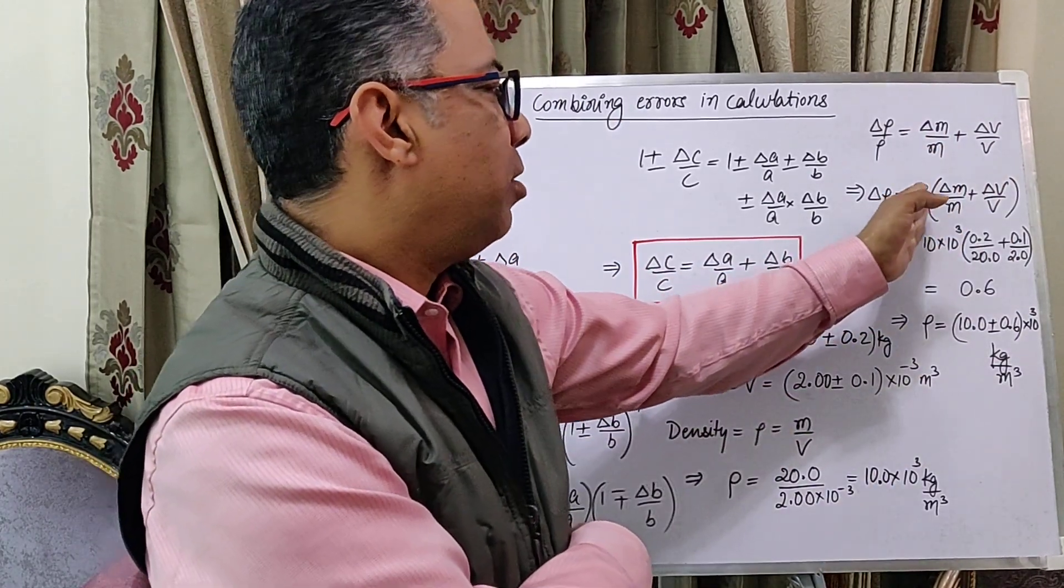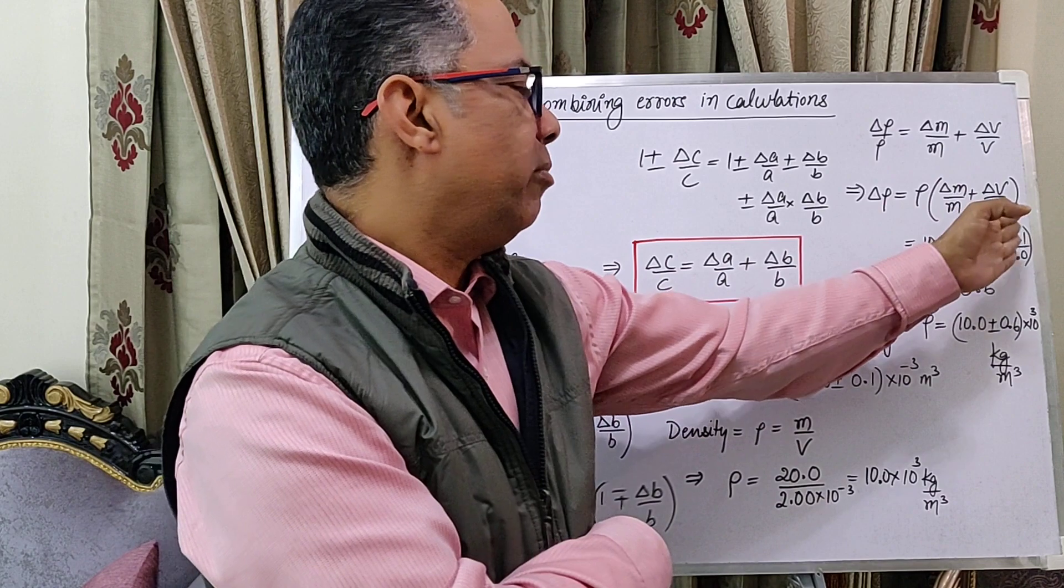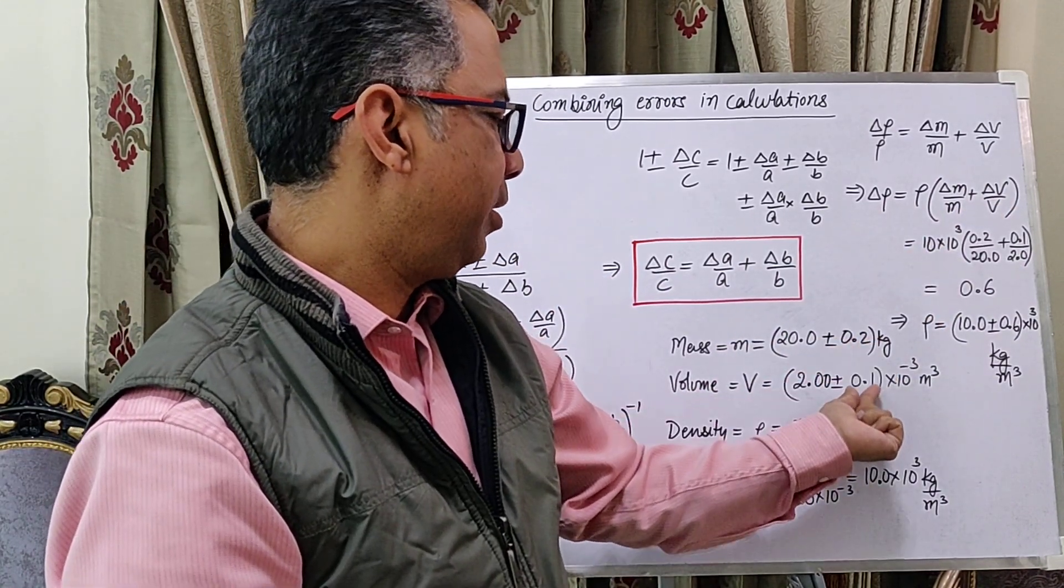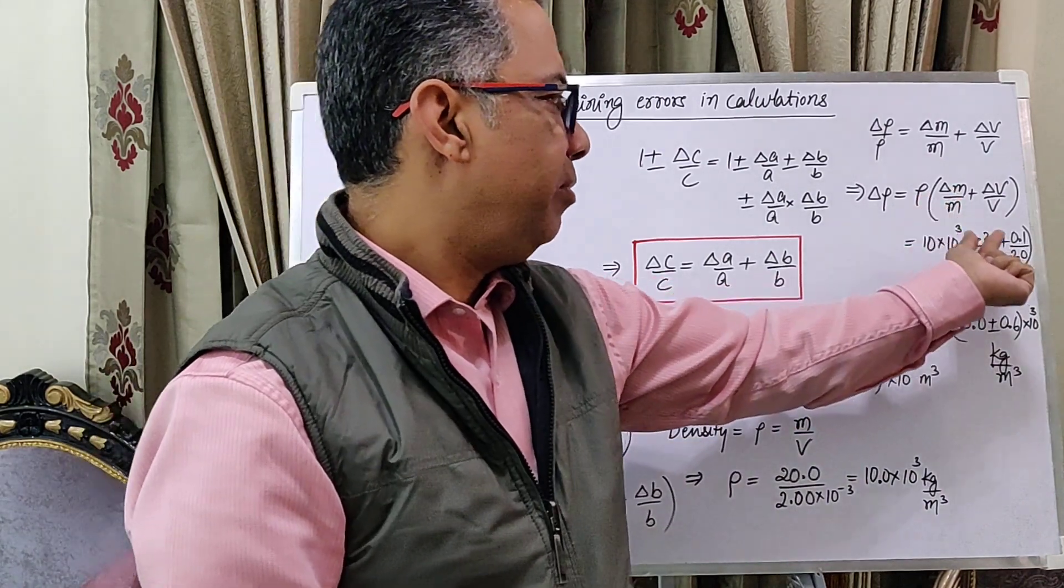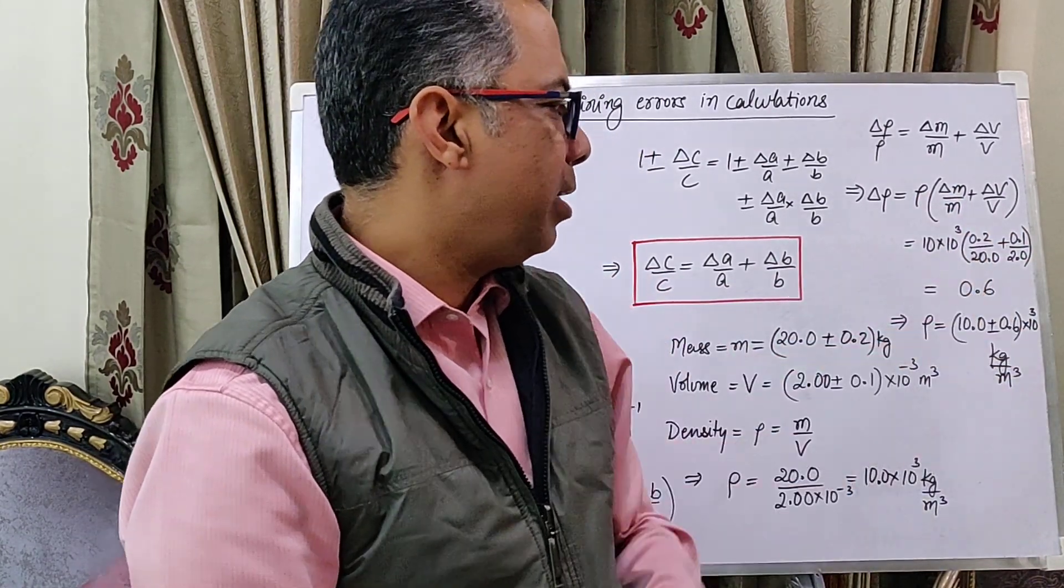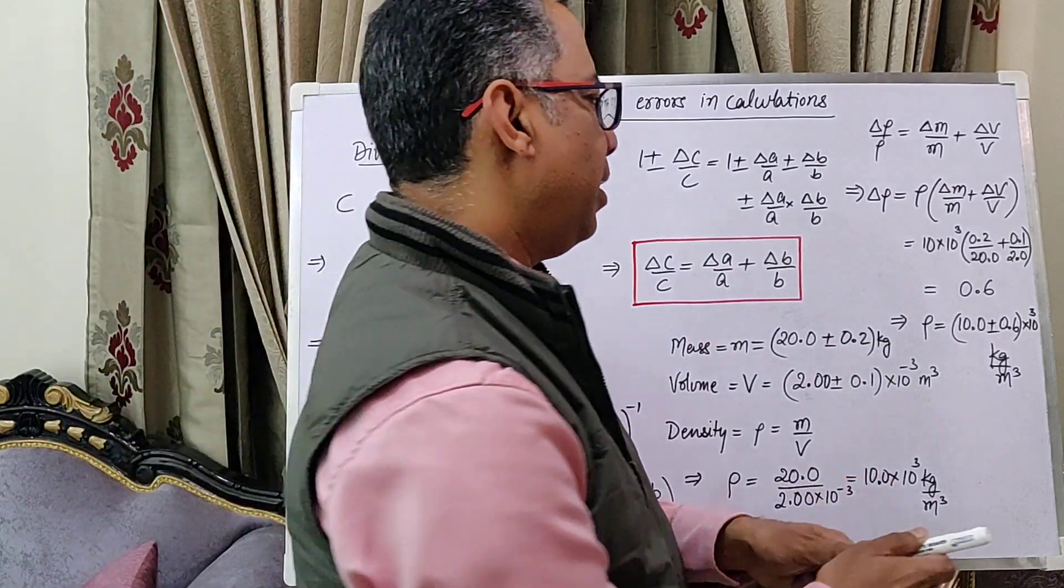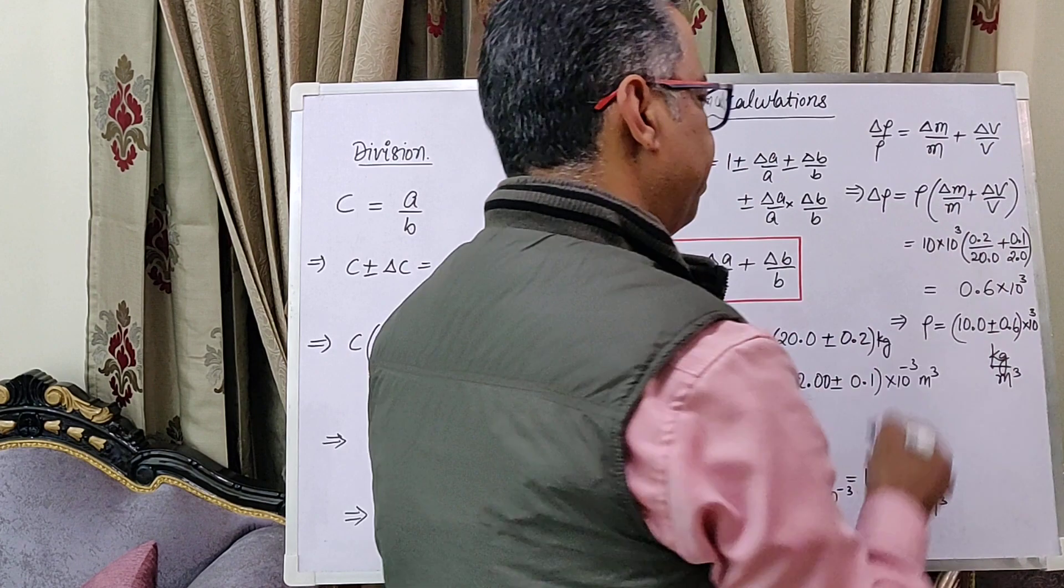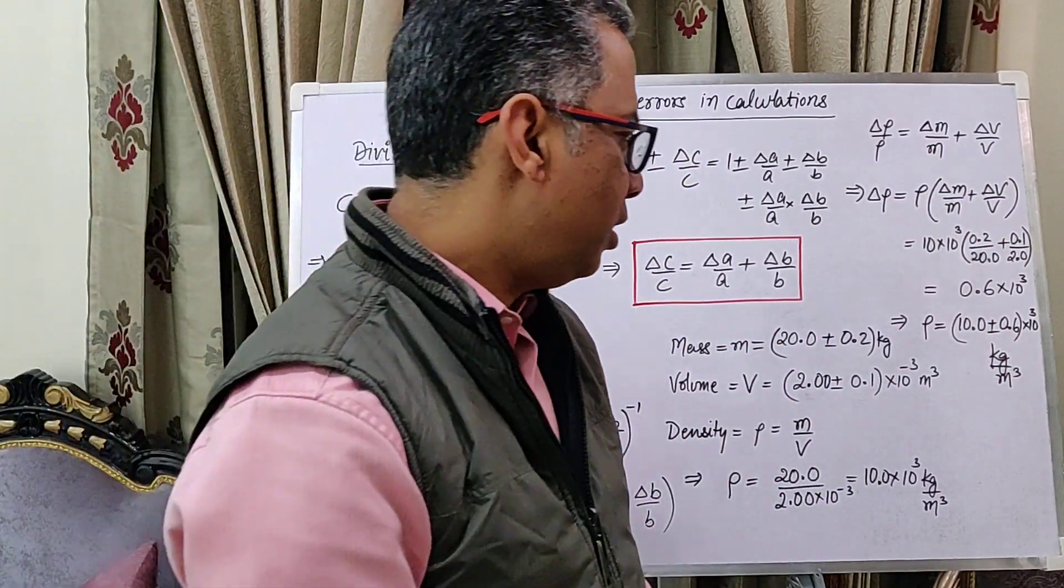And on substituting the actual values provided, this is delta M, this is delta V. We substitute these values here and we end up with 0.6 times 10 to the power 3, unit being kg per meter cube.